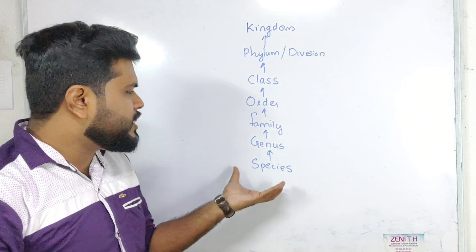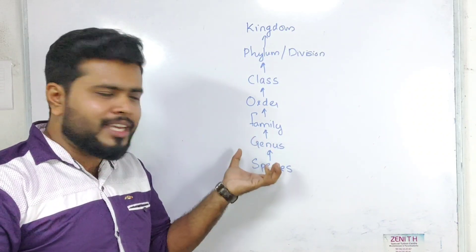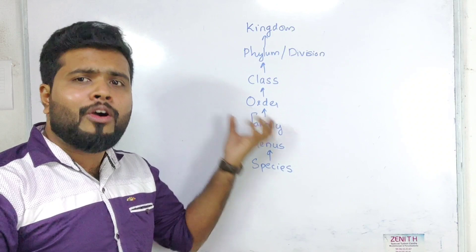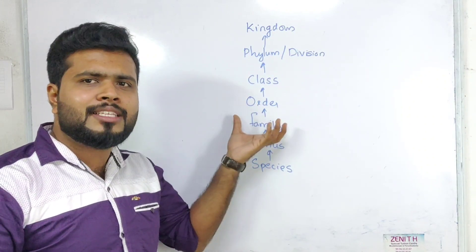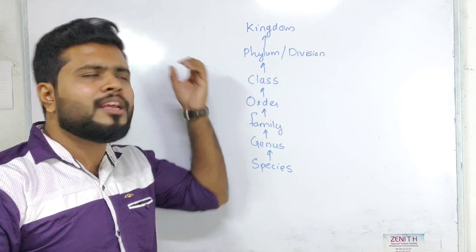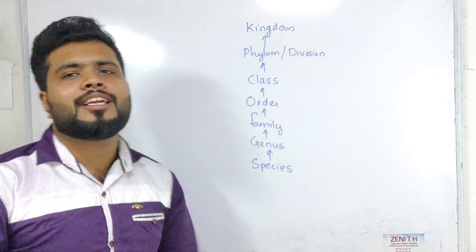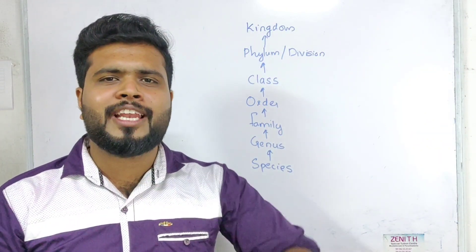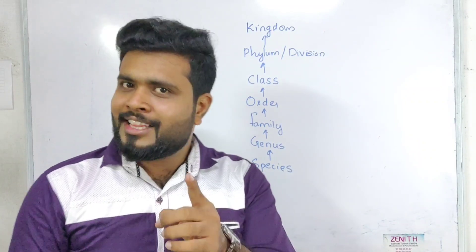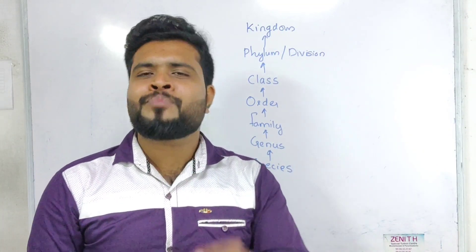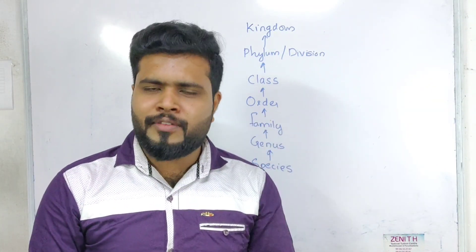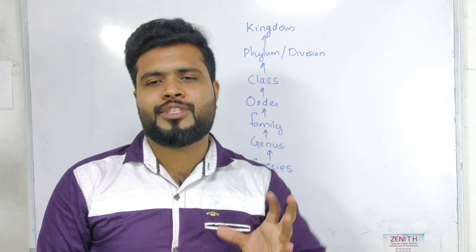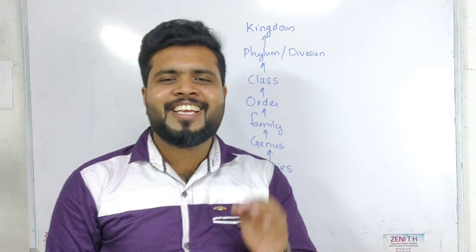The correct order is: species, genus, family, order, class, phylum or division, kingdom. So this is the third section in the book: phylum or division, class, order, family, genus, species.